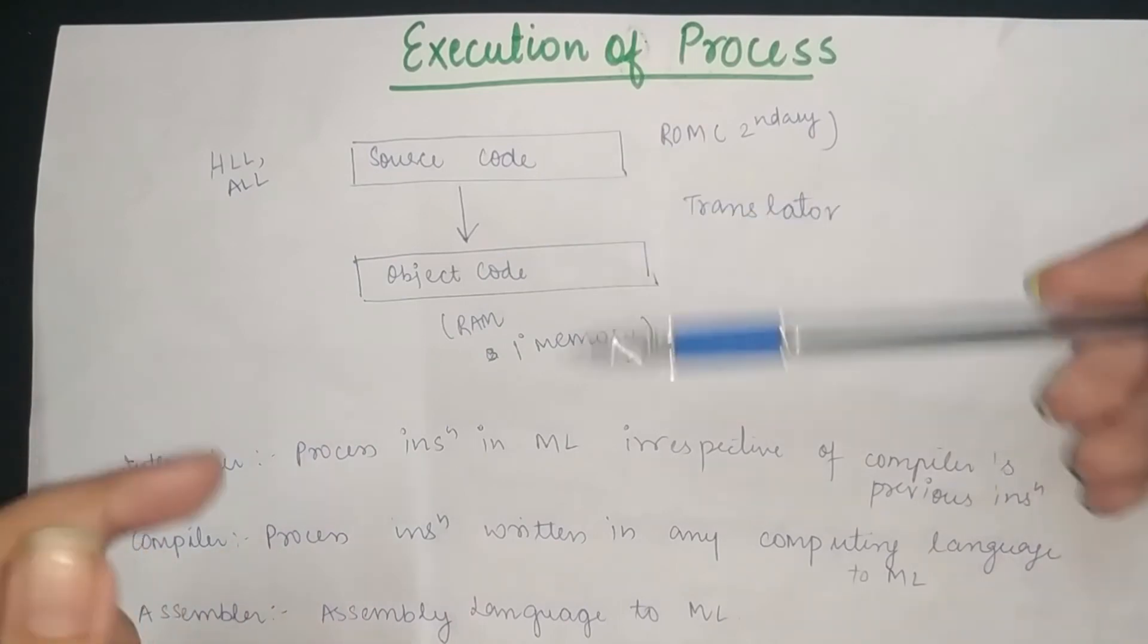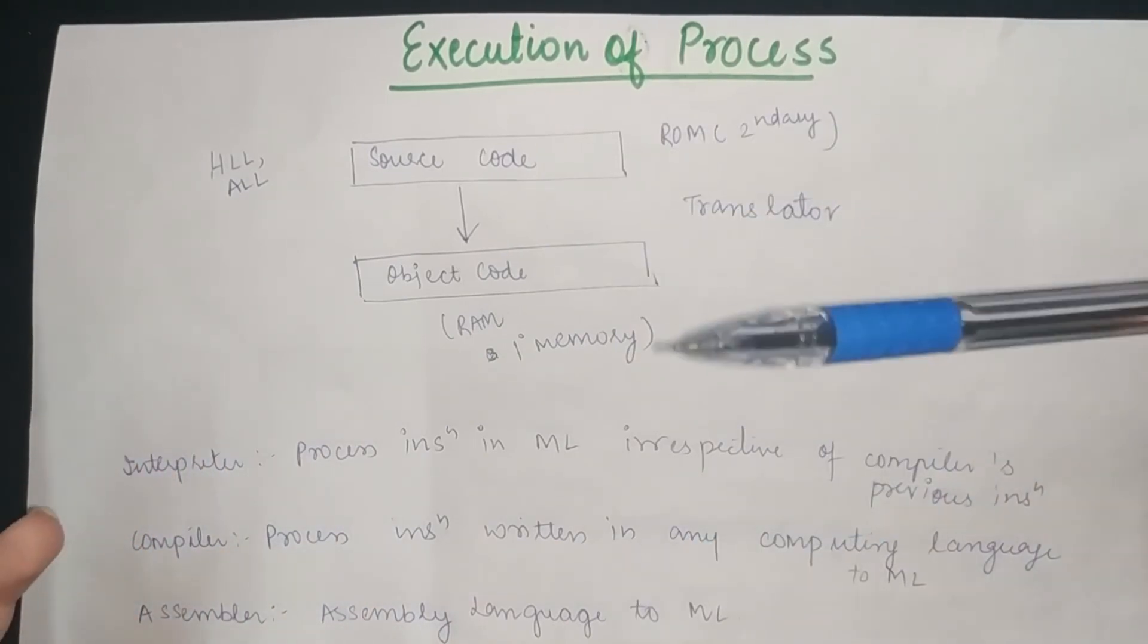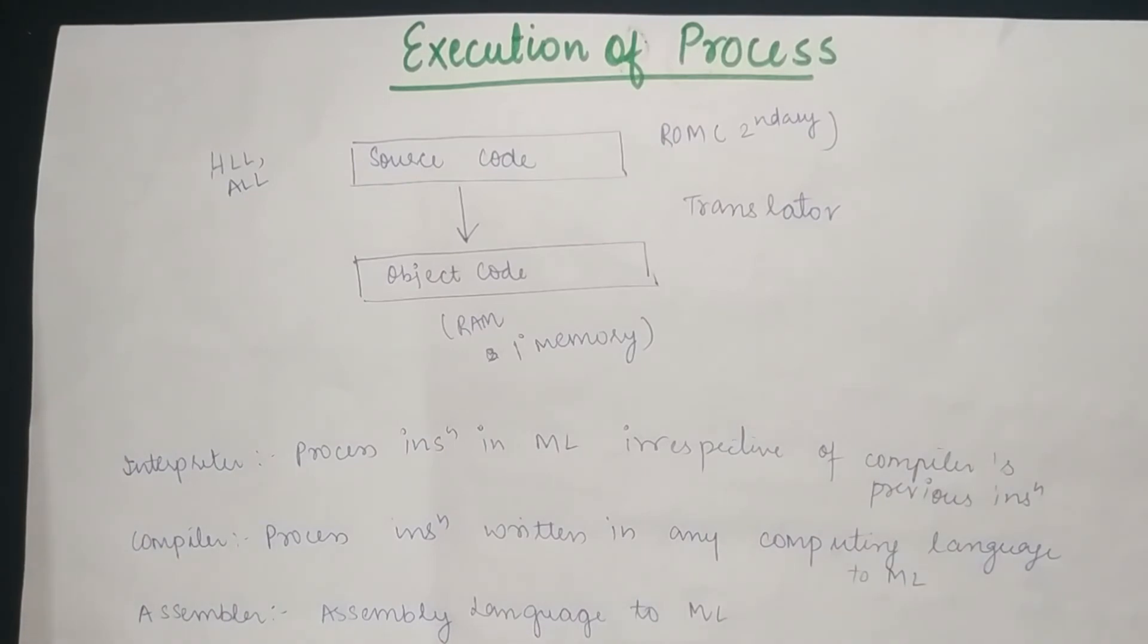Now when the source code is converted into object code, then it is written in RAM, which is the primary memory, so that we can access it to the computer and further process it.